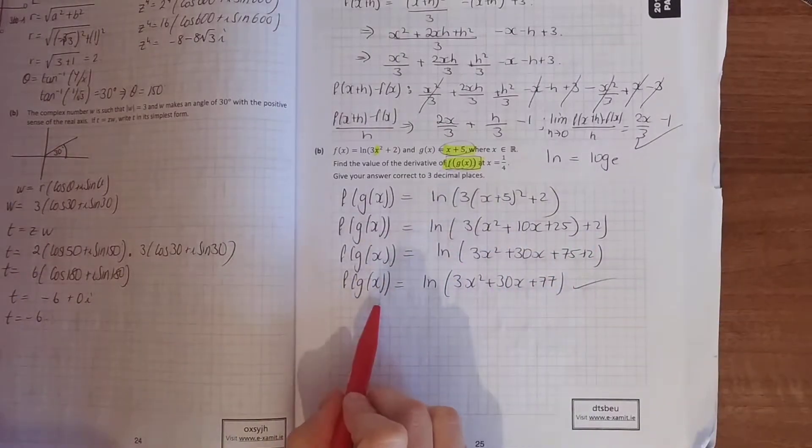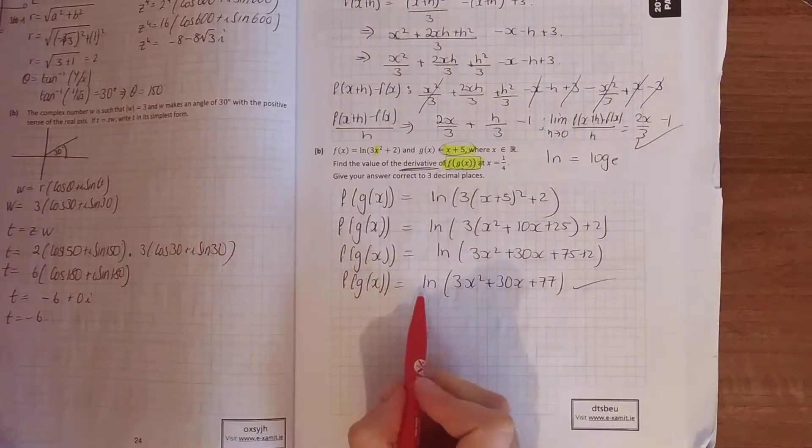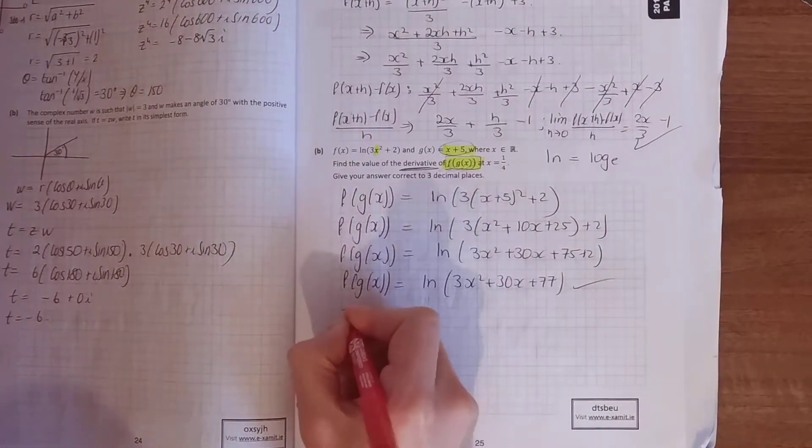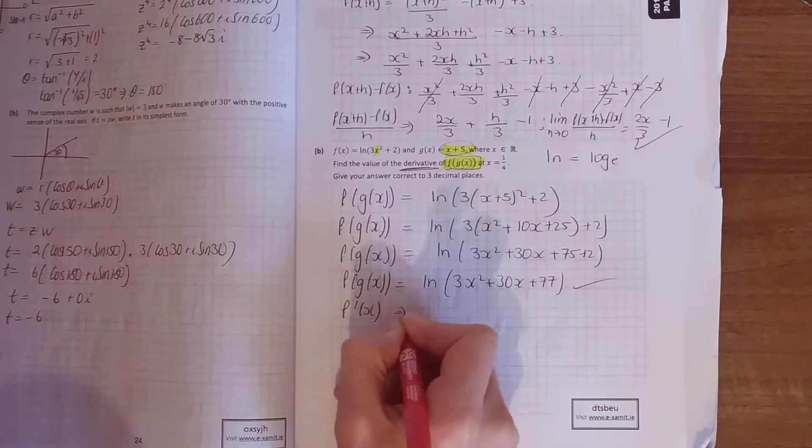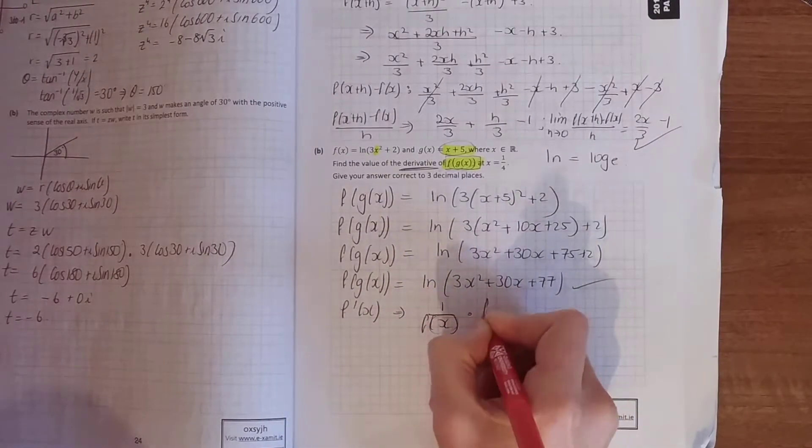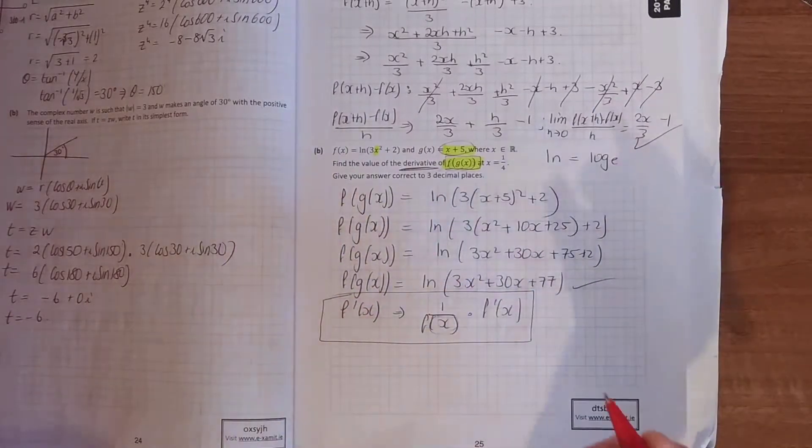Now we haven't differentiated yet, all we've got is f(g(x)), so take the time to do that right, find the value of the derivative of this now. So in order to differentiate log functions, if we're differentiating log functions, 1 over x, or 1 over the function, so 1 over f(x) times the derivative of your f'(x). Don't need to write that down.